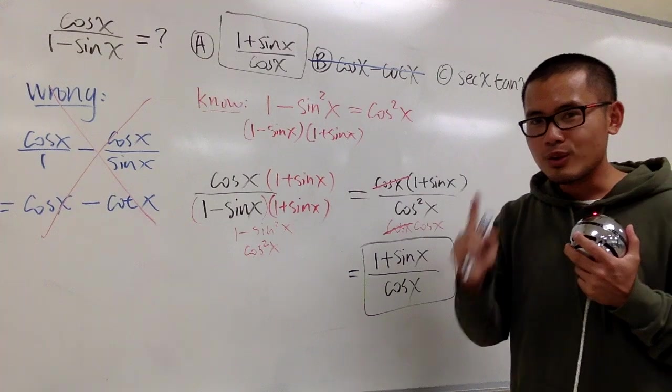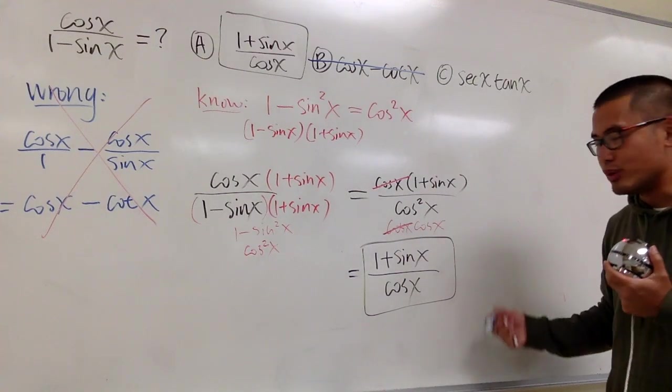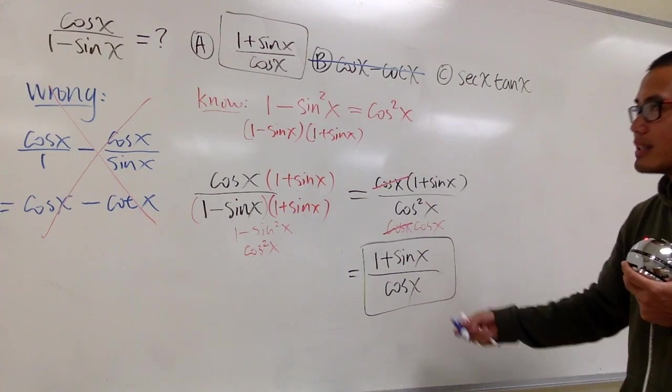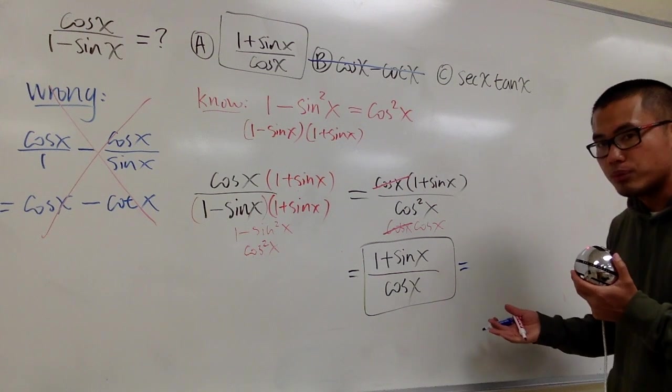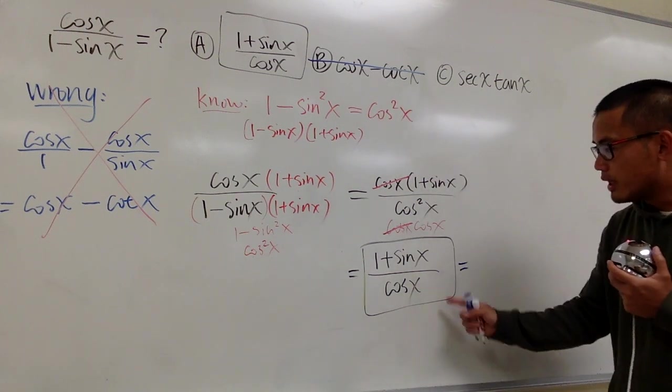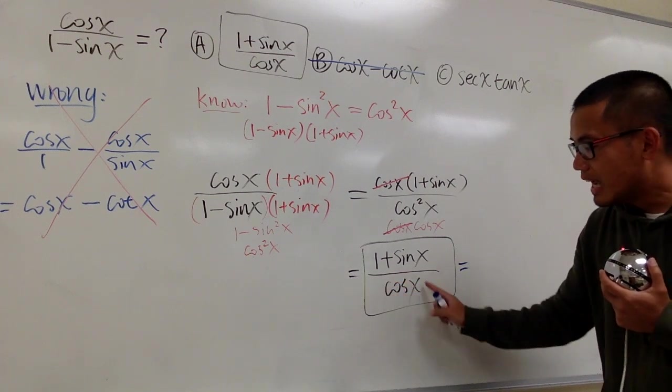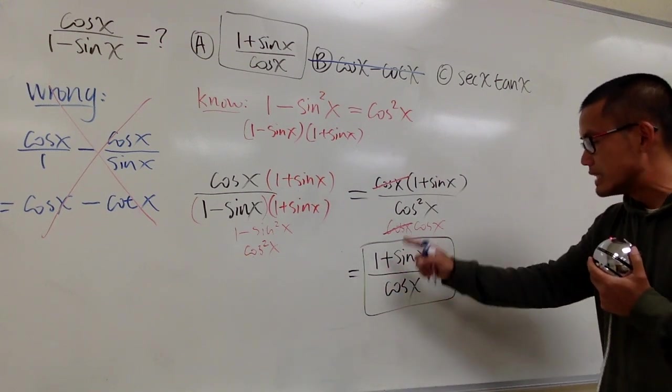However, I do want to make one last remark. It's possible for us to continue, but we stopped it right here because this was in choice A already. So, if you want to continue, just in case if this wasn't one of the answer choices, we only have one term on the bottom, we have two terms on the top. In this case, we can split the fraction.